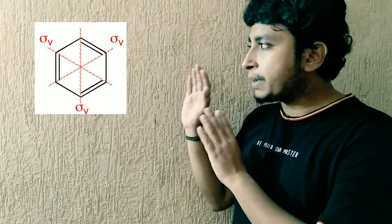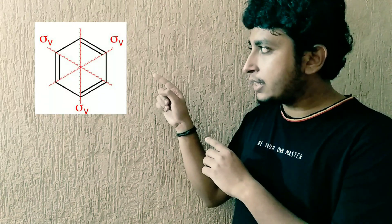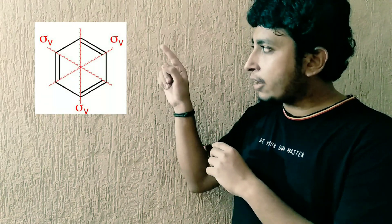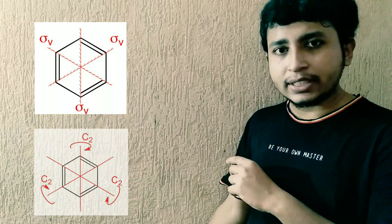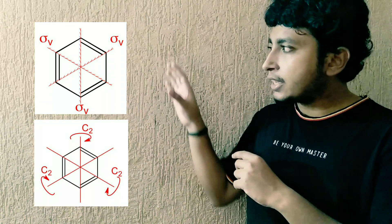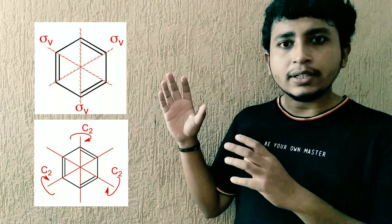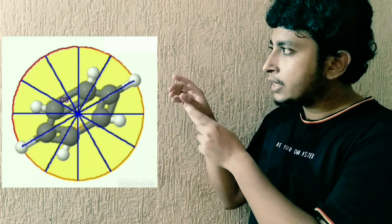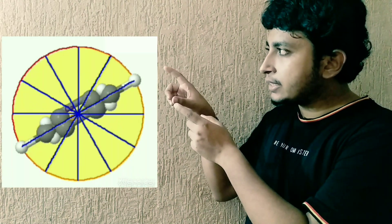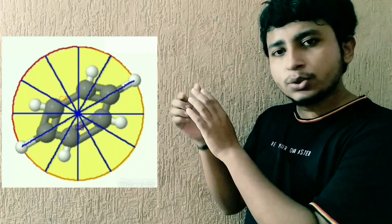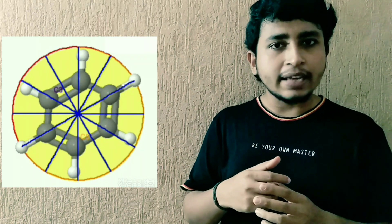Now we come to another symmetry element — sigma_v. This benzene ring has 3 sigma_v planes, and along these 3 sigma_v planes, 3 C2 axes are present. We can show these two symmetry elements together in a 3D model. As you can see, the benzene ring can rotate along this C2 axis to keep the same molecule intact.